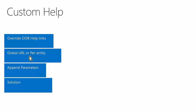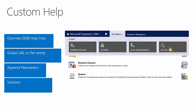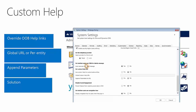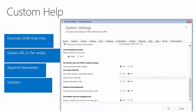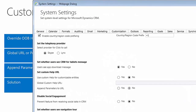System customizers have the ability to create a global custom help URL, which will redirect all help requests to that global help section. Using the global custom help URL is an option and not mandatory to take advantage of the custom help functionality.